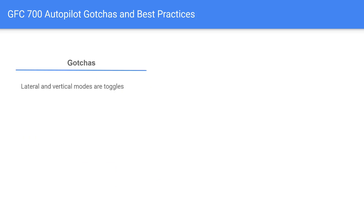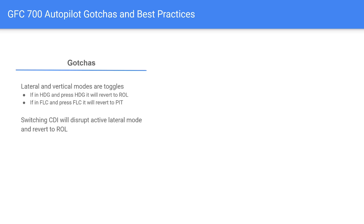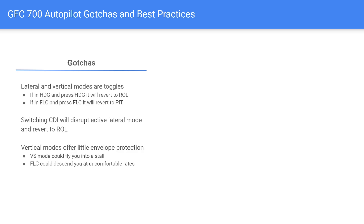Things to watch out for with the GFC-700: lateral and vertical modes are all toggles. Switching the CDI will disrupt the lateral mode and revert to roll mode. Vertical modes do not offer envelope protection — if you engage vertical speed mode commanding 1,000 fpm climb in a 172 at 7,000 feet, it will fly you close to a stall. Similarly, flight level change set to 115 knots could descend you at a very uncomfortable rate depending on power setting.